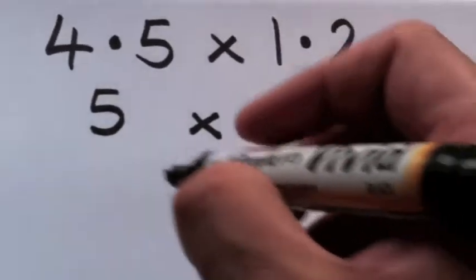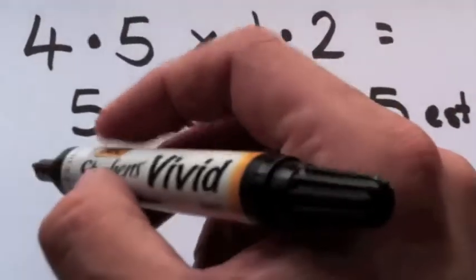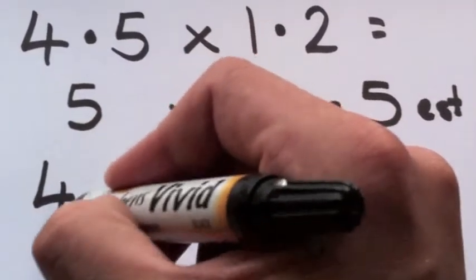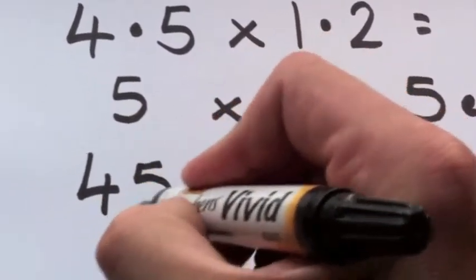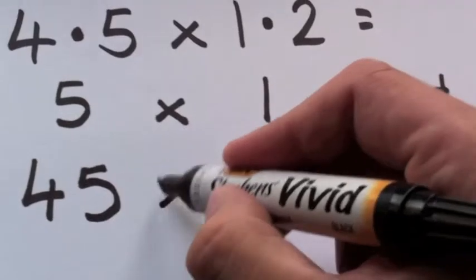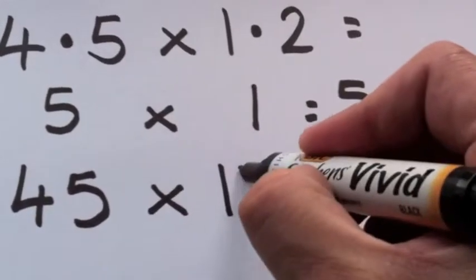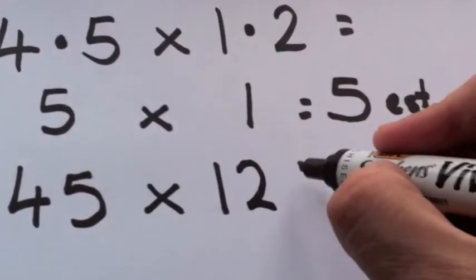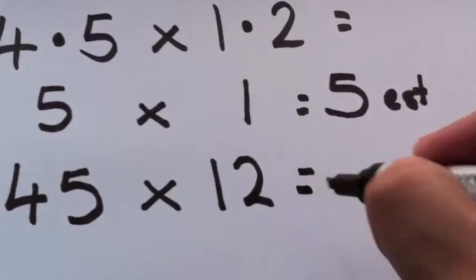What you're going to do now is just take those decimals out. Simple, take those decimals out. 45 times 12. Now you've seen that in a previous video, 45 times 12.